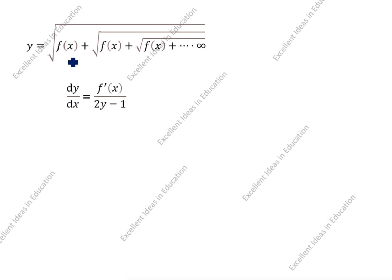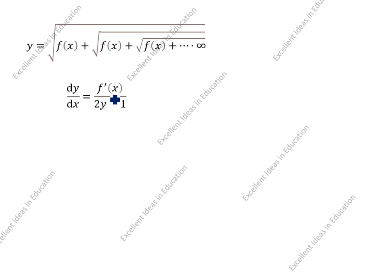y is equal to √(f(x) + √(f(x) + √(f(x) + ...))) going on to infinity. The formula for the differentiation of f(x) in this form is: dy/dx = f'(x) divided by (2y − 1).